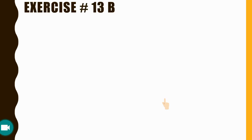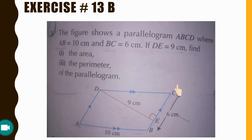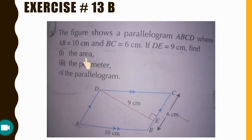Exercise 13B, Question 3: The figure shows parallelogram ABCD. AB is equal to 10 cm, BC is equal to 6 cm, and DE is the perpendicular distance between BC and AD — which we call the height — and that is equal to 9 cm. We need to find: first, the area of the parallelogram, and second, the perimeter of the parallelogram.